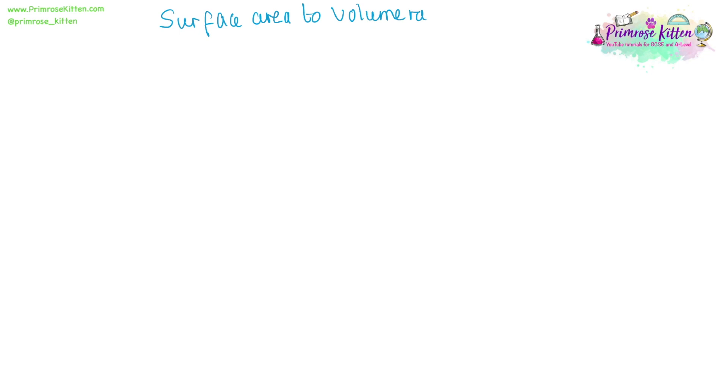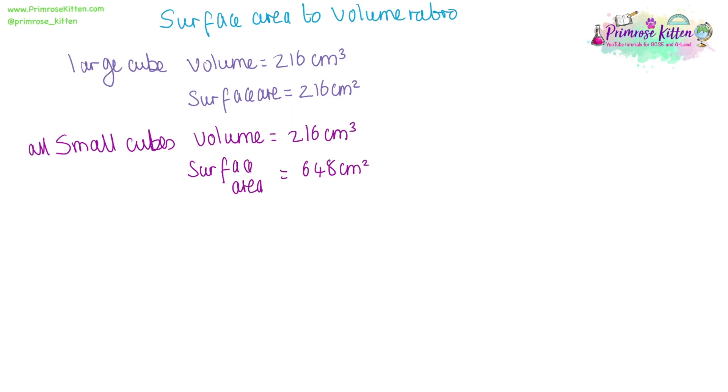We can now start to tie these two bits of information together and look at the surface area to volume ratio, which is one of the key things that gives nanoparticles their unique properties. The large cube had a volume of 216 centimetres cubed and a surface area of 216 centimetres squared. All of the smaller cubes together had a volume of 216 centimetres cubed and a surface area of 648 centimetres squared. One individual small cube had a volume of 8 centimetres cubed and a surface area of 24 centimetres squared. For the large cube, the volume and surface area are in a one to one ratio. For all of the small cubes, 648 divided by 216 gives a surface area to volume ratio of three. It is the same for one small cube because it's just scaled down. 24 divided by 8 gives us 3 as the surface area to volume ratio.